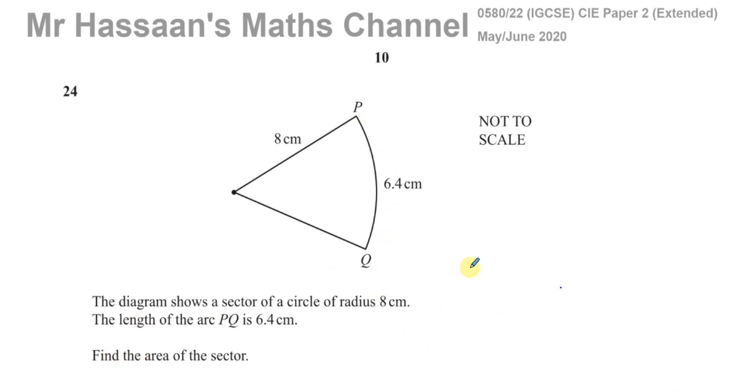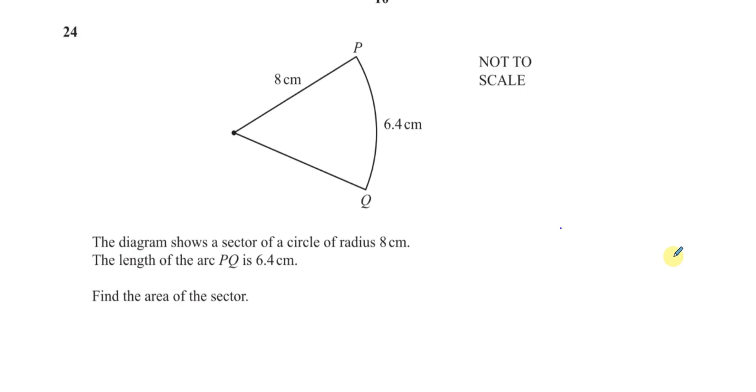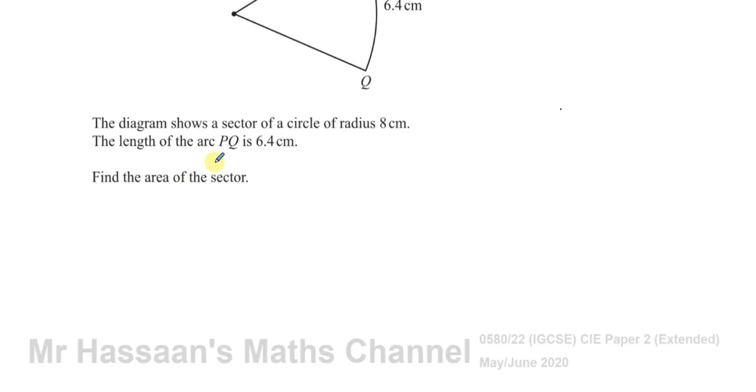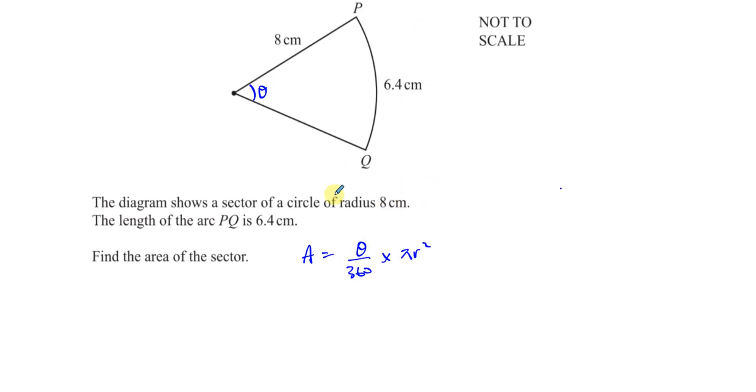Find the area of the sector. Now we know that the area of a sector is given by the angle, which is not given to us there, let's call it theta, over 360 times pi r squared. It's that fraction of the whole area of the circle that we're looking for, the fraction that this angle makes with the whole circle.